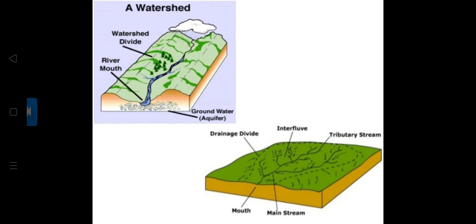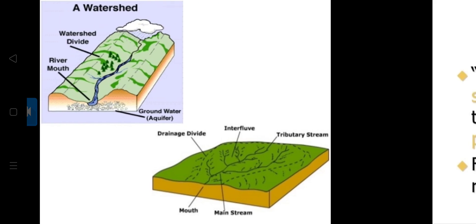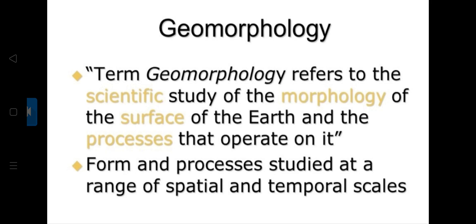Looking at this picture will give a brief idea of what Davis's concept of cycle of erosion is about. The term geomorphology refers to the scientific study of the morphology of the surface of the earth and the processes that operate on it — studying form and processes at a range of spatial and temporal scales.